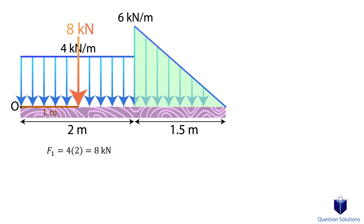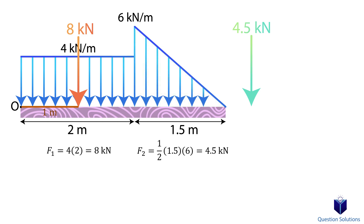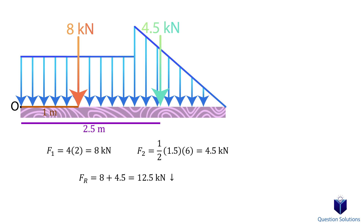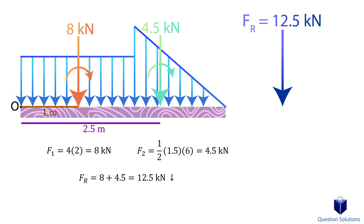Next, we look at the triangle piece. We find the area of a triangle by multiplying half times base times height. To place this force, we need to figure out the centroid location, which would be one-third the length of the base — so that's 0.5 meters. The total distance from point O would then be 2 meters plus 0.5 meters, giving us 2.5 meters. The total resultant force for both pieces is simply the addition of the two values we found. Now we need a place to put this resultant force. Since we aren't going to show the resultant force at point O, we actually need to place it somewhere that accounts for each individual moment created by the individual resultant forces.